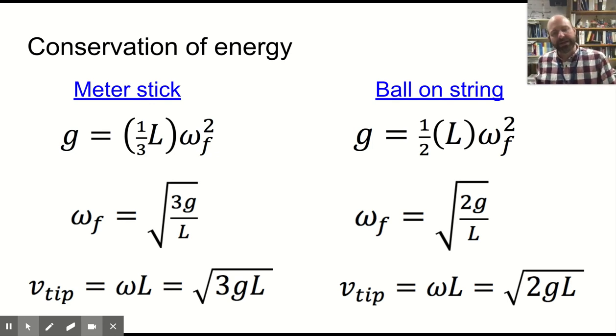Which we can then translate into the linear velocity at the tip, which is omega times L, which is the full length of the system, to get root 3gL and root 2gL, showing us that the velocity of the tip of the meter stick is faster than that of the ball on the string.